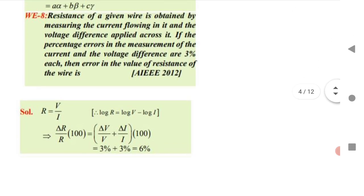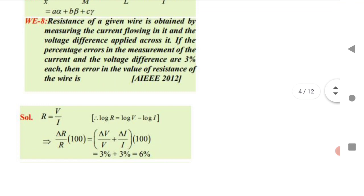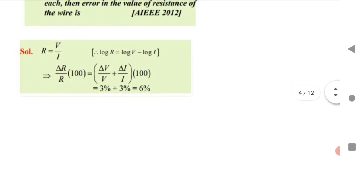The resistance of a wire is measured by measuring current and voltage. The percentage error in measurement is 3%. Using Ohm's law, R = V / I. The percentage error in R equals the sum of percentage errors in V and I. Substitute the given values to get the answer — a very simple question.